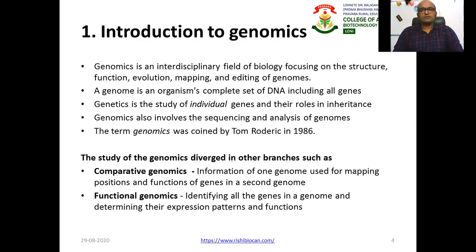A genome is the organism's complete set of DNA including all of its genes. In humans we have about 100,000 genes, but not all of them are transcribed or code for protein — only about 20,000 to 25,000 genes actively code for protein, and we call those functional genes.